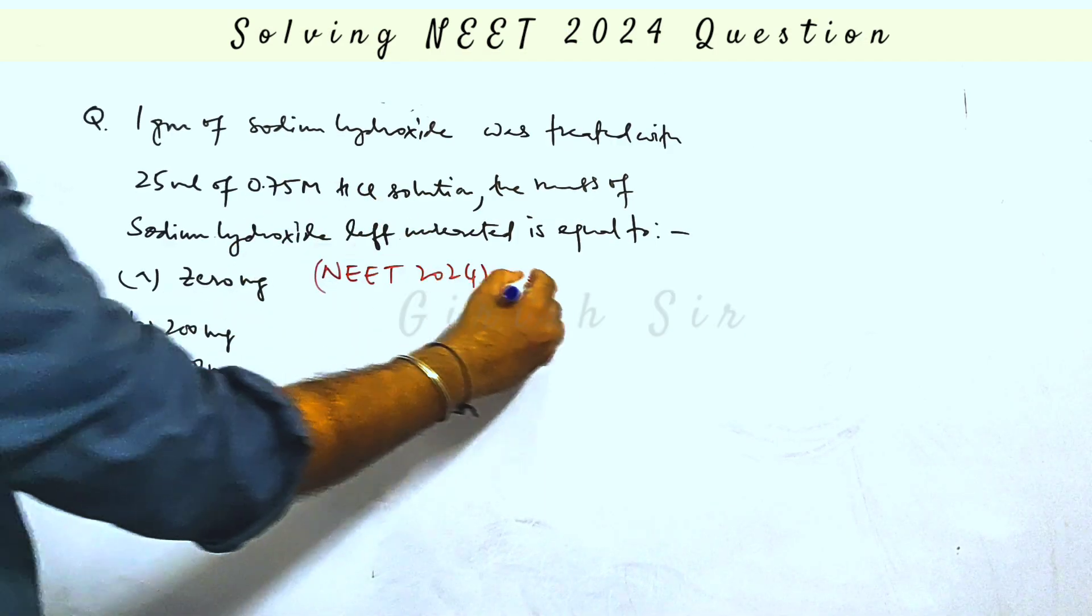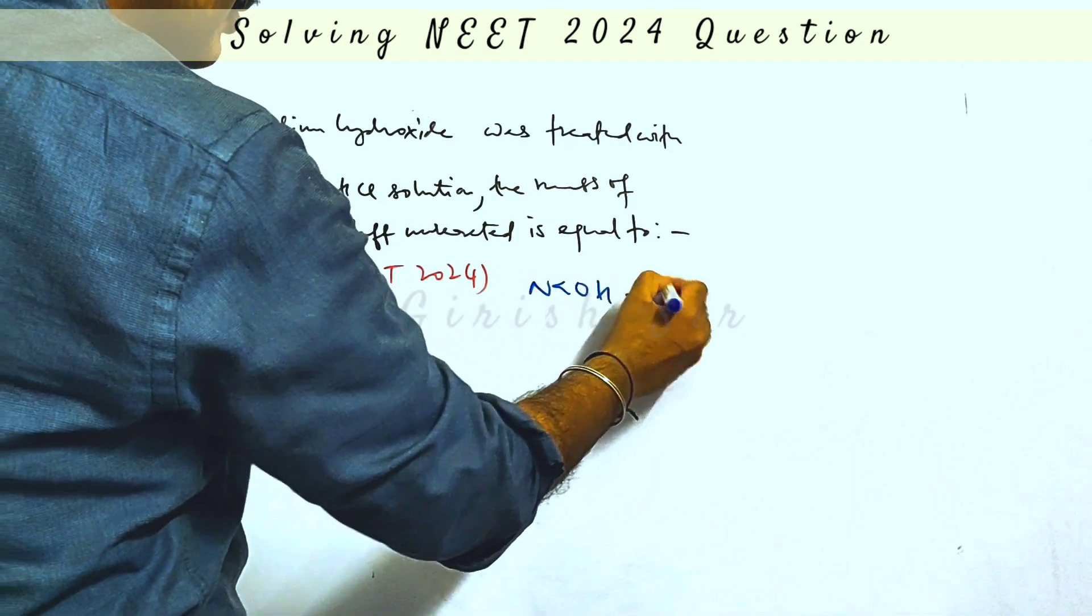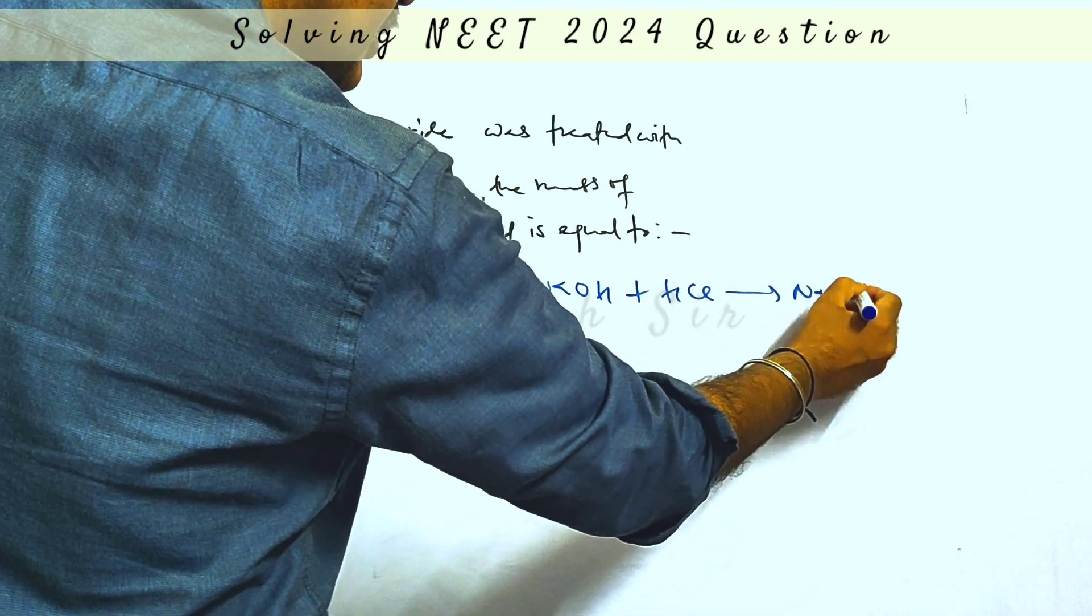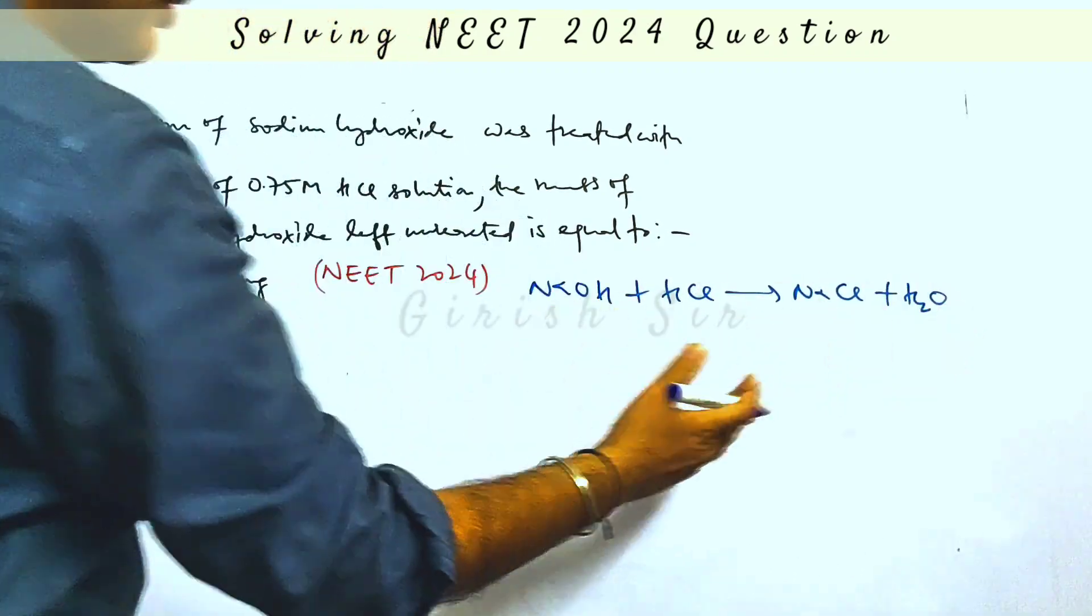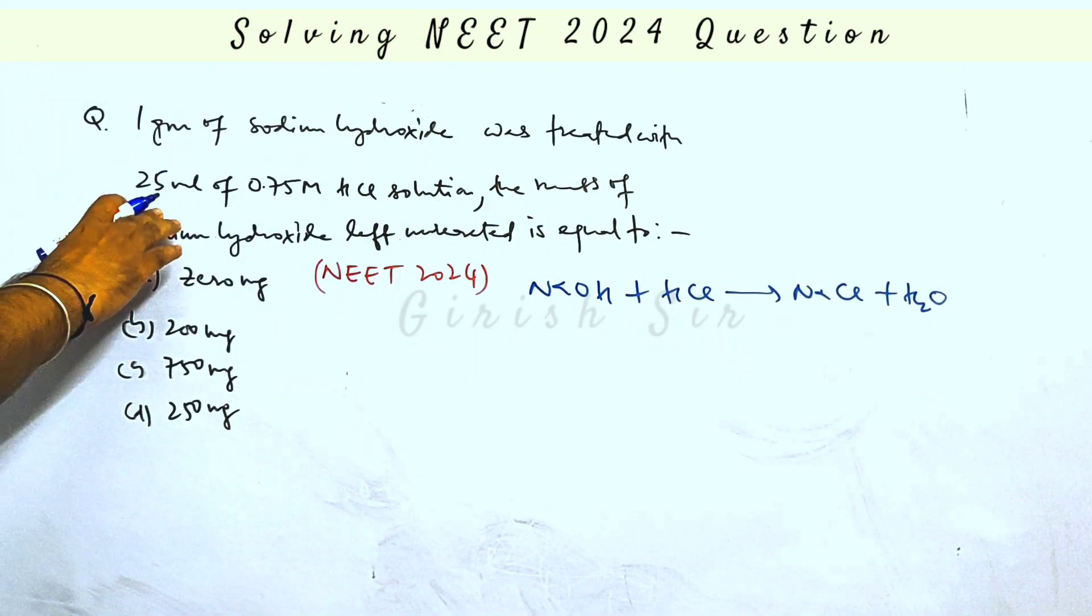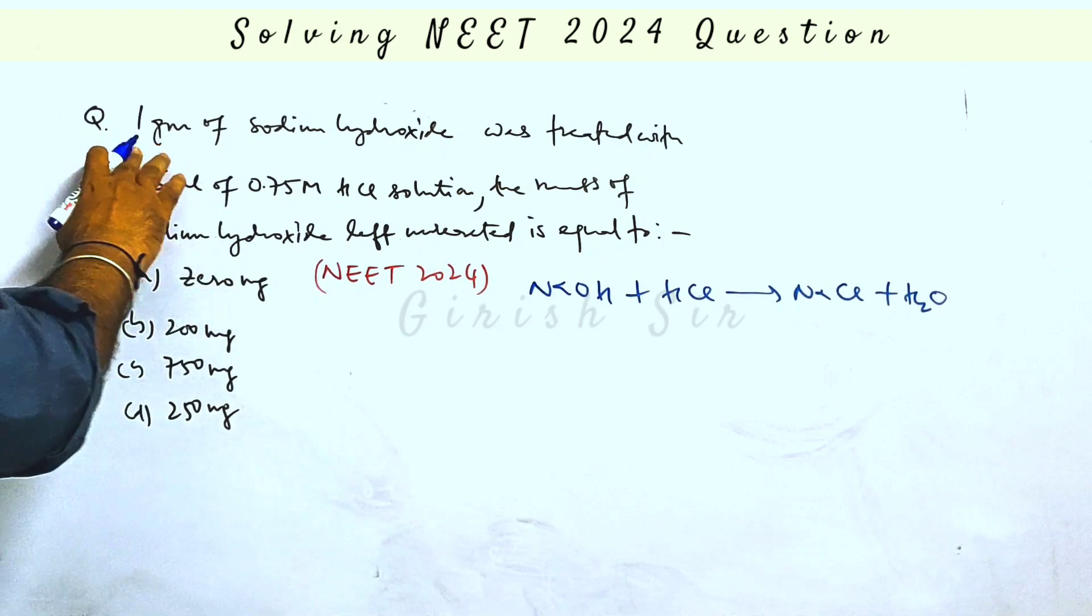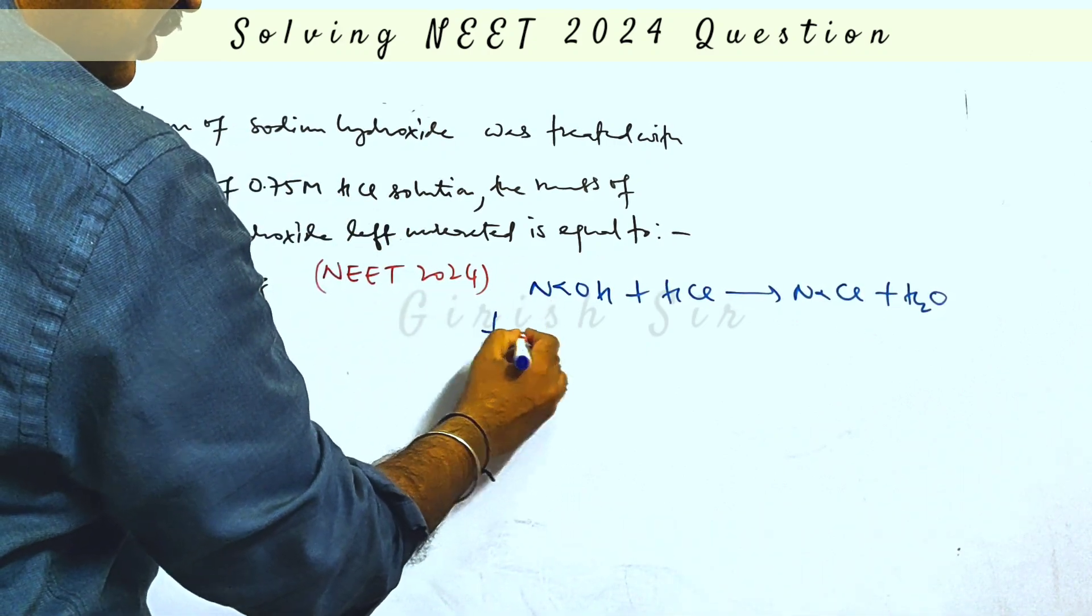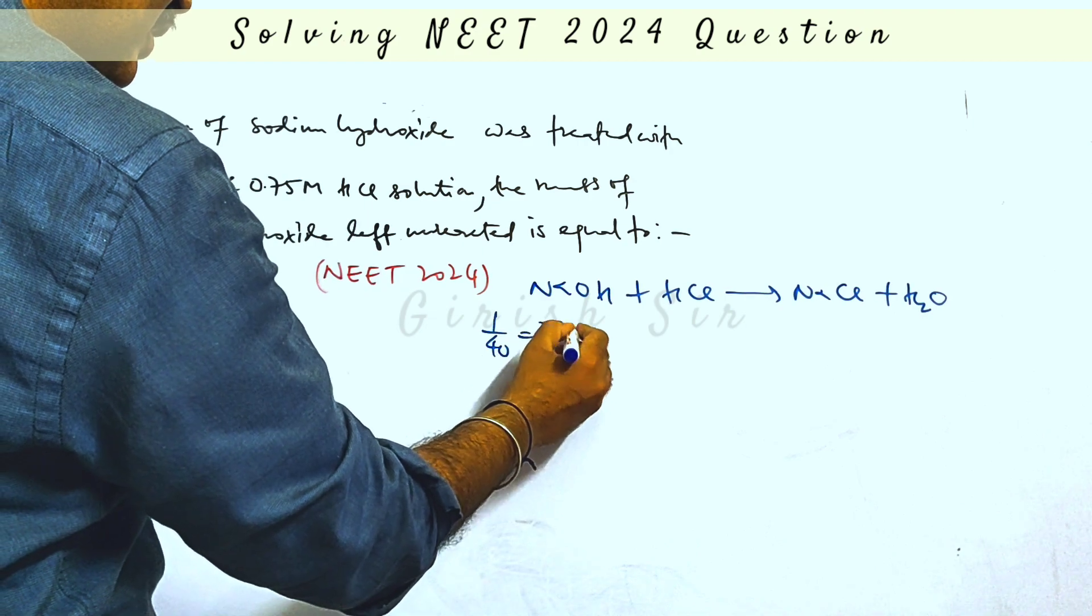In this equation, sodium hydroxide reacts with HCl to form NaCl and water. This is a balanced equation. The number of moles are unspecified. We evaluate 1 gram of sodium hydroxide, which means 1 by 40, equal to 25 × 10^-3 moles.